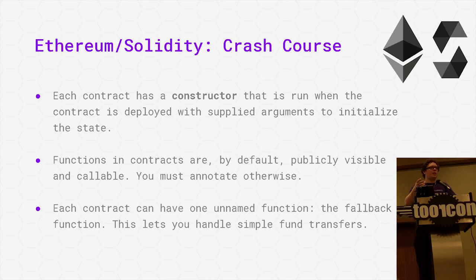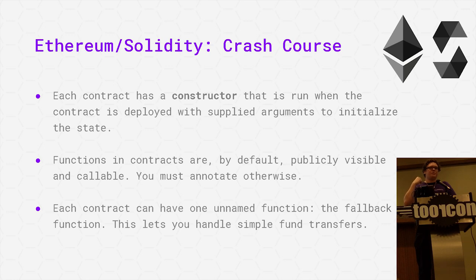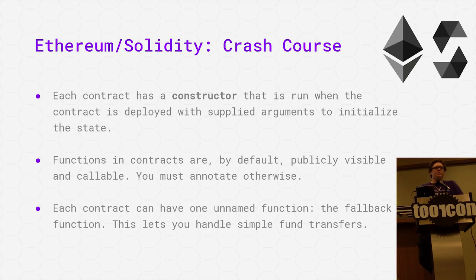When you call into a function, it can modify state in some way. Each contract also has one unnamed function called the fallback function, which gets called if it's not known what function you are trying to call. So if you send something without specifying what function you want to call, or if you call a function that isn't actually there, this gets executed. A lot of times people just revert in this function, but sometimes it will actually do interesting things.